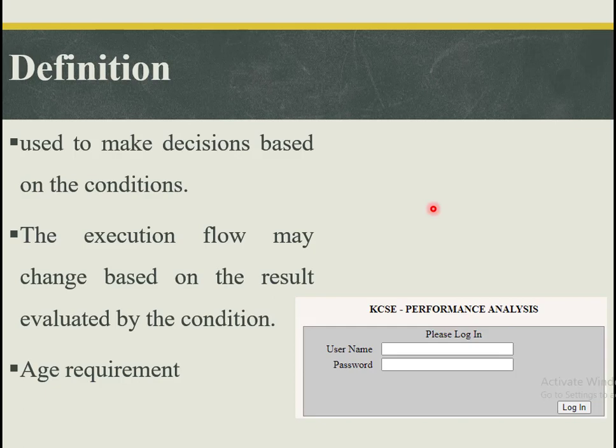For example, imagine a program that's supposed to assess whether someone is supposed to get an ID or not where in this particular case the age is the requirement. So we may have a program that prompts a user to enter their age. And so if the age is above 18 or it's 18 and above then we are going to allow this person to proceed with the application for an ID. However, if we realize that the age entered is below 18 then we are going to terminate that process. The person may not be able to proceed further to the next step. So you can see in this given case, the condition has influenced the flow of execution.